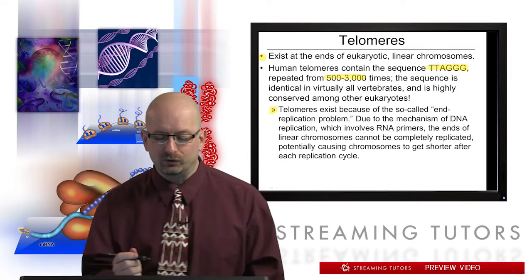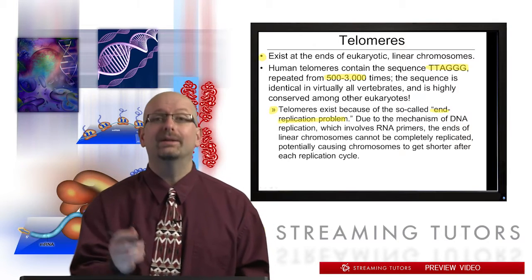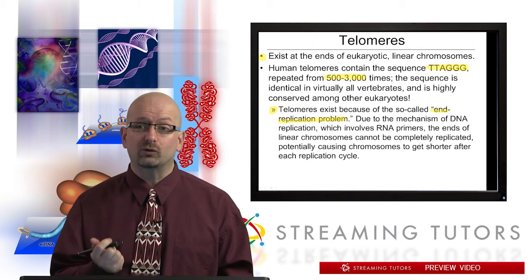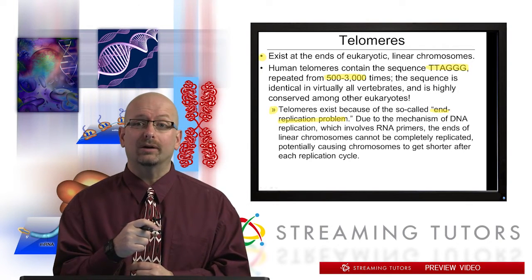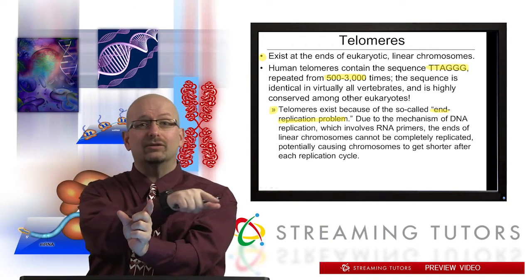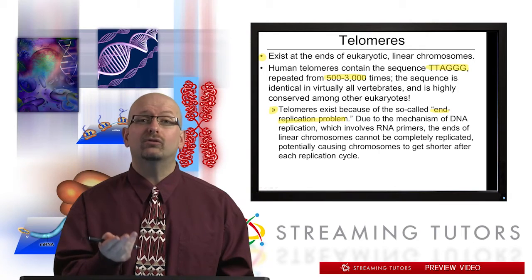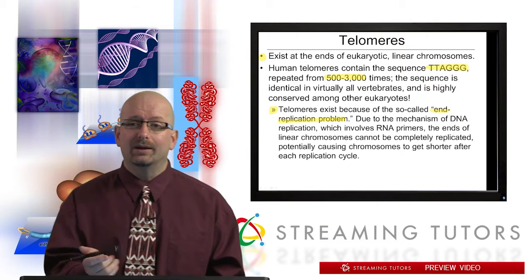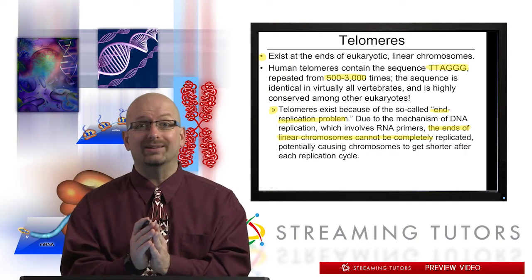But why do telomeres have to exist? They exist because of what has been called the end replication problem, which exists for all linear chromosomes. Due to the mechanism of DNA replication, it involves RNA primers — the DNA is extended off of that primer, then the RNA is destroyed and DNA fills it in. But DNA polymerase cannot just start; it needs the primer. So the ends of the linear chromosomes cannot be replicated, which causes the chromosome to get shorter after each replication cycle.